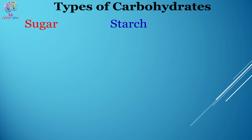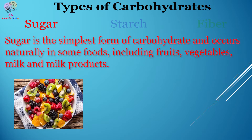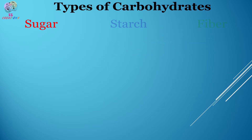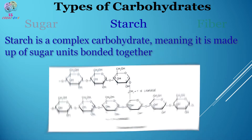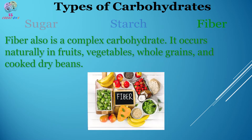There are three main types of carbohydrates: sugar, starch, and fiber. Sugar is the simplest form of carbohydrates and occurs naturally in some foods including fruits, vegetables, milk, and milk products. Types of sugar include fruit sugar known as fructose, table sugar known as sucrose, and milk sugar called lactose. Starch is a complex carbohydrate, meaning it is made up of sugar units bonded together. Starch occurs naturally in vegetables, grains, and cooked dry beans.